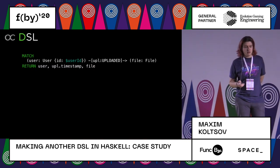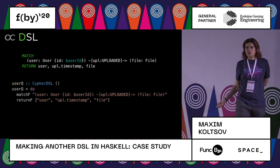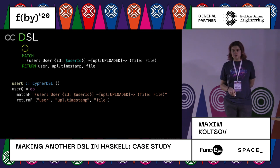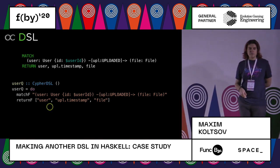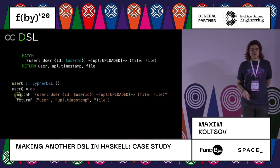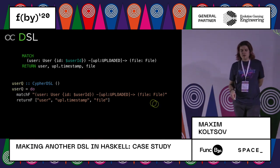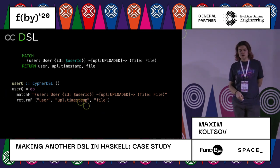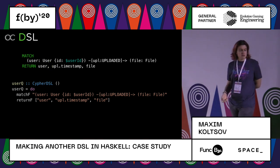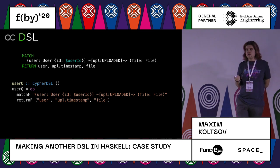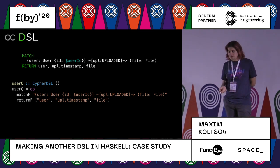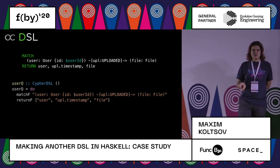But there are strings, and no one likes to write strings in their code. So we would like to have some sort of DSL. We would like to map Cypher operators to some functions in Haskell. In our library, this is a free monadic DSL — the combinator 'matchF' creates a MATCH operation in Cypher, the operator 'return' creates a RETURN statement in Cypher, and so on. But there are still strings, so let's think about what we want GHC to check for us.